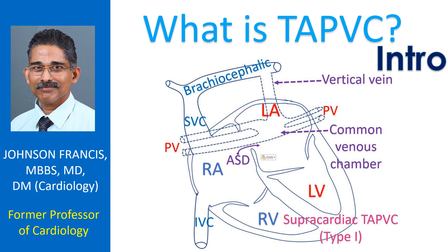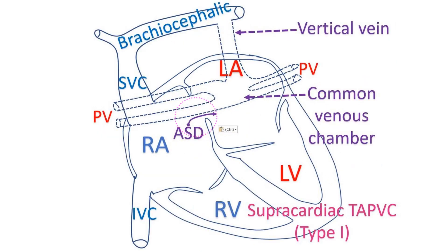Pulmonary veins are the blood vessels returning oxygenated blood from the lungs to the heart. The right and left atria are the upper chambers of the heart. When all the pulmonary veins join the right side of the heart instead of the left side, a defect in the wall between the upper chambers — known as an atrial septal defect — is needed to maintain life.